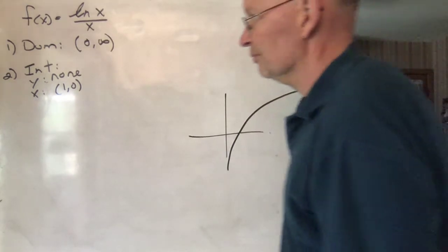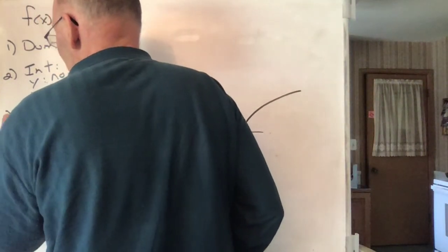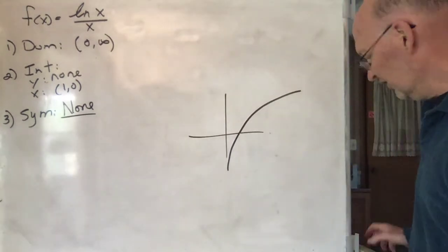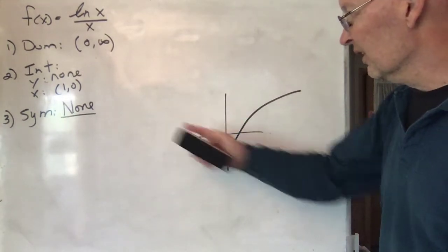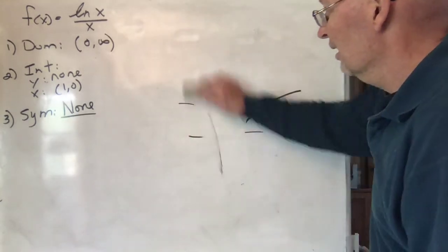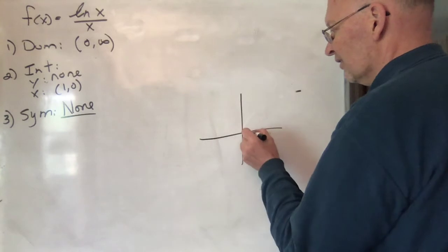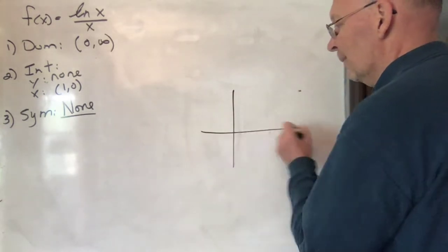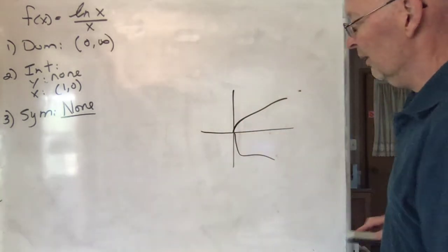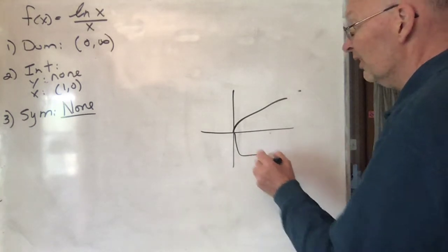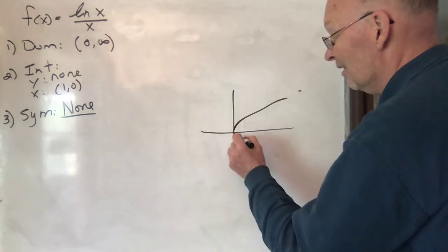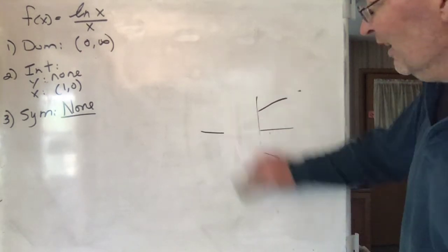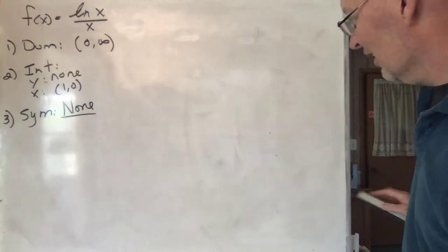You need to know your basic functions — here's what ln(x) looks like. Symmetry: none. Why? We don't have any domain to the left of zero, so you can't have even or odd symmetry. You might ask why it can't be symmetric with respect to the x-axis — and the answer is because then it wouldn't be a function. If you don't have both sides of the y-axis, you don't have any symmetries.